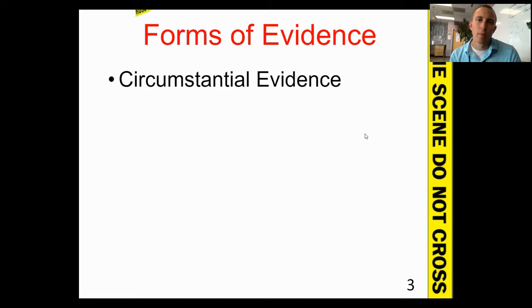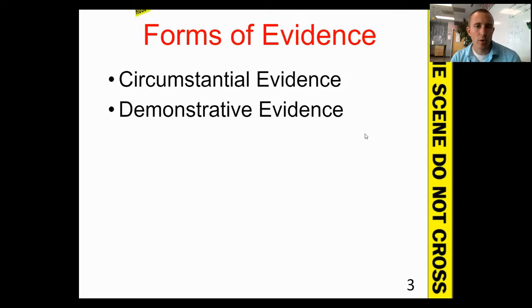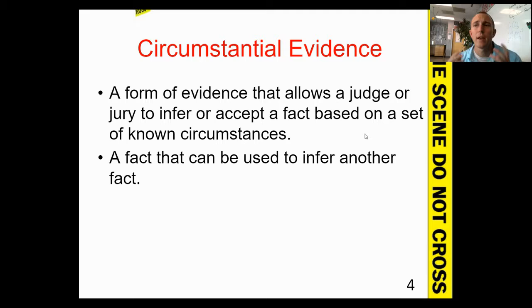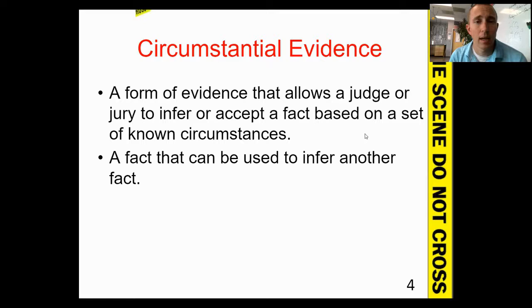There are a couple of broad categories of evidence types. First is circumstantial evidence — a term that's a little difficult to define. Circumstantial evidence is evidence that does not directly imply a conclusion. You need another piece of information to infer that the statement is correct. It's up to the judge or the jury — what we call the trier of fact — to determine whether the conclusion put forward by the prosecution or defense is valid.